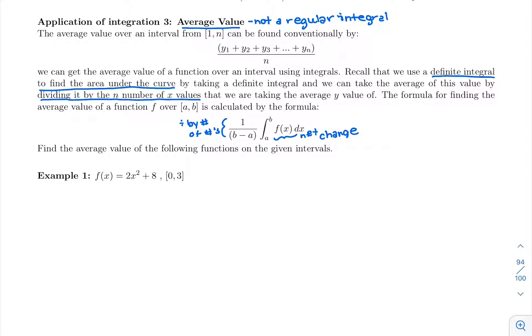If we're looking at finding the average value for the following function, it's a regular integral to start with, and then we're going to divide by the number of numbers. Another way to write this is dividing it by b minus a. Either one is the same thing, dividing by b minus a.